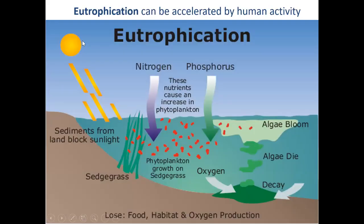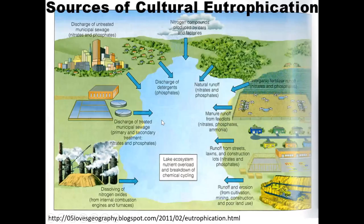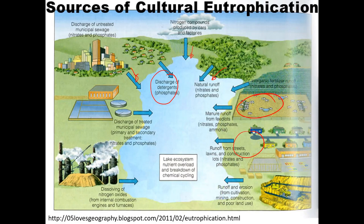Here's a picture showing eutrophication: nitrogen and phosphorus leading to phytoplankton, algal bloom, die-off, decay, and oxygen depletion. This slide shows sources of human or cultural eutrophication: sewage from the city, nitrogen from cars and factories, detergents, natural runoff, and farm runoff. We're trying to prevent all these things from going directly to the water and destroying that water source.